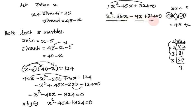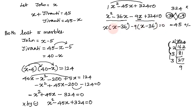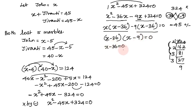Factoring by grouping: x(x minus 36) minus 9(x minus 36) equals 0, giving (x minus 36)(x minus 9) equals 0. So x minus 36 equals 0 gives x equals 36, and x minus 9 equals 0 gives x equals 9.